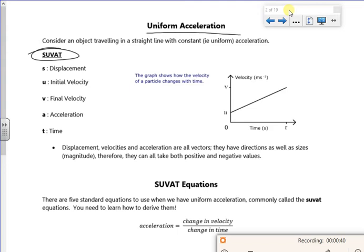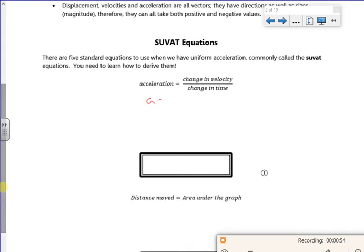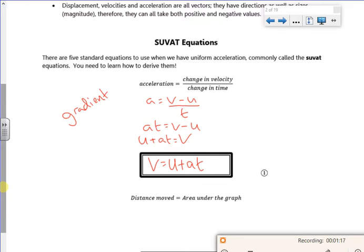We're choosing the velocity time graph, and we actually did this at the start of the previous pack. So if I look at the gradient, it's V minus U over T, so I've got my acceleration is V minus U over T. I can multiply through by T and then take the U over, so that gives me V equals U plus aT as one of my SUVAT equations. That just comes from the gradient, because the change in velocity over time is acceleration.